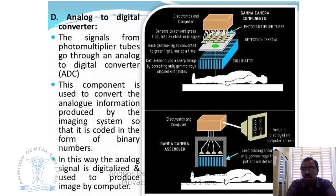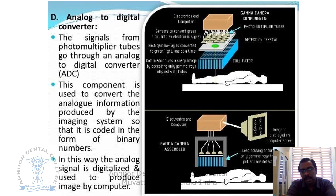To summarize: the most common radionuclide material used is Technetium-99, because it has a very short half-life of six and a half hours, is stable, and can be easily produced using a cyclotron. An image is obtained from the gamma camera when the patient emits gamma rays, which are captured by photomultiplier tubes and converted from analog to digital to generate the final image. That is how a radionuclide image is generated.